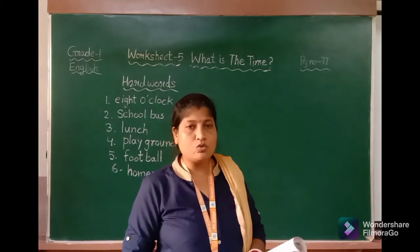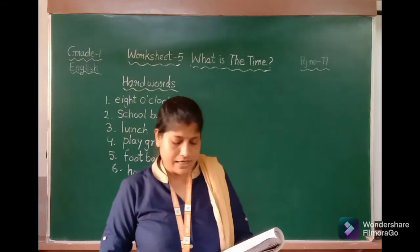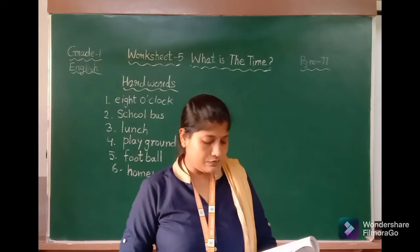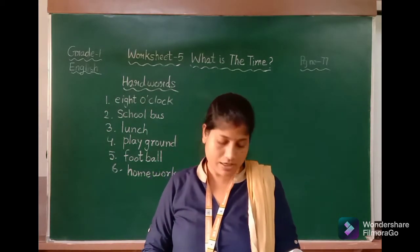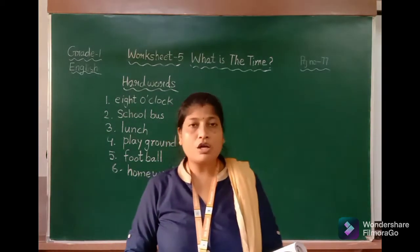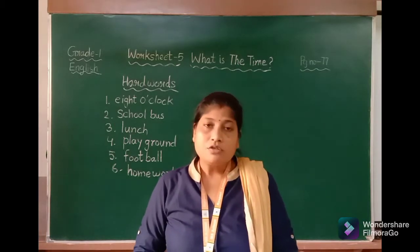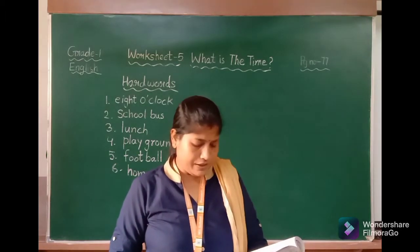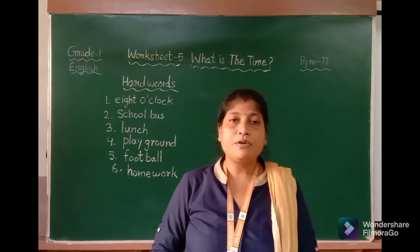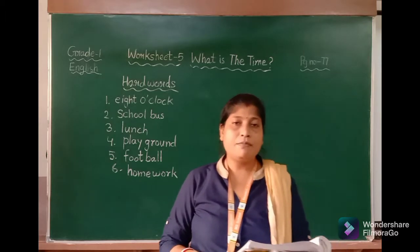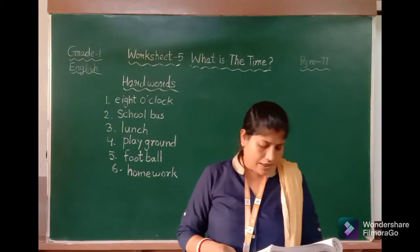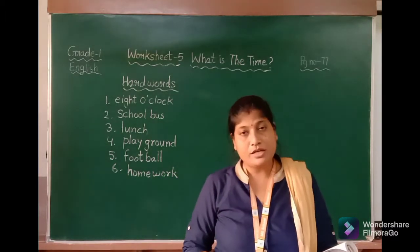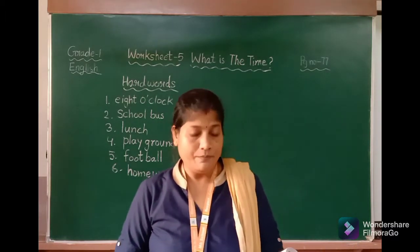What does Raj do now? Ab Raj kya kar raha hai? He is at home — ab woh ghar par hai. He does his homework — woh apna homework kar raha hai. It is 7 o'clock — Raj ke 7 baj rahe hain. Raj has dinner with mother and father — Raj apna raat ka khana kha raha hai. It is 10 o'clock — Raj goes to sleep — Raj sone gaya.